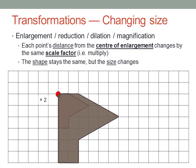We say the image is similar to the object. The same angles, but not the same lengths. It's similar, but not congruent.